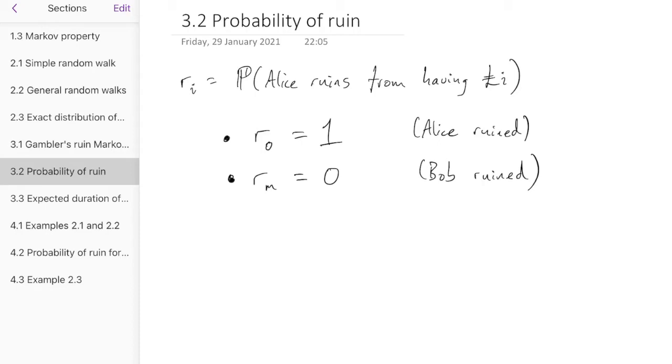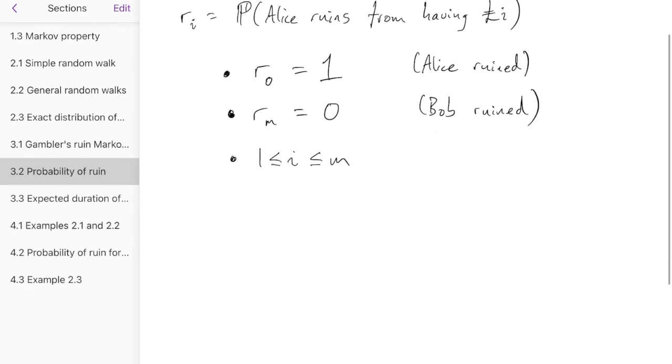Okay, but what about when i is somewhere in between? We are going to use a very crucial technique for the whole of this course. And this crucial technique is called conditioning on the first step. This is the most important idea in the whole of Math 2750.